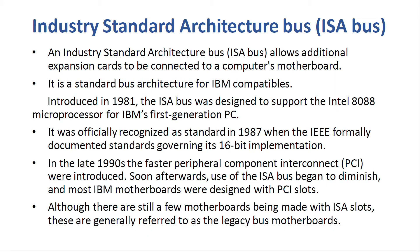ISA — Industry Standard Architecture — is a parallel communication standard. An ISA bus allows additional expansion cards to be connected to a computer's motherboard. It accepted cards for sound, display hardware, hard drives, and other devices. It is also referred to as the PC80 bus, and is a standard bus architecture for IBM compatibles. Introduced in 1981, the ISA bus was designed to support the Intel 8088 microprocessor for IBM's first generation PC. The 8-bit version was used in IBM PC XT and interfaced the motherboard buses of Intel 8088 CPU, while the 16-bit version was an upgrade of the motherboard buses of Intel 8088 CPU used in IBM 80.